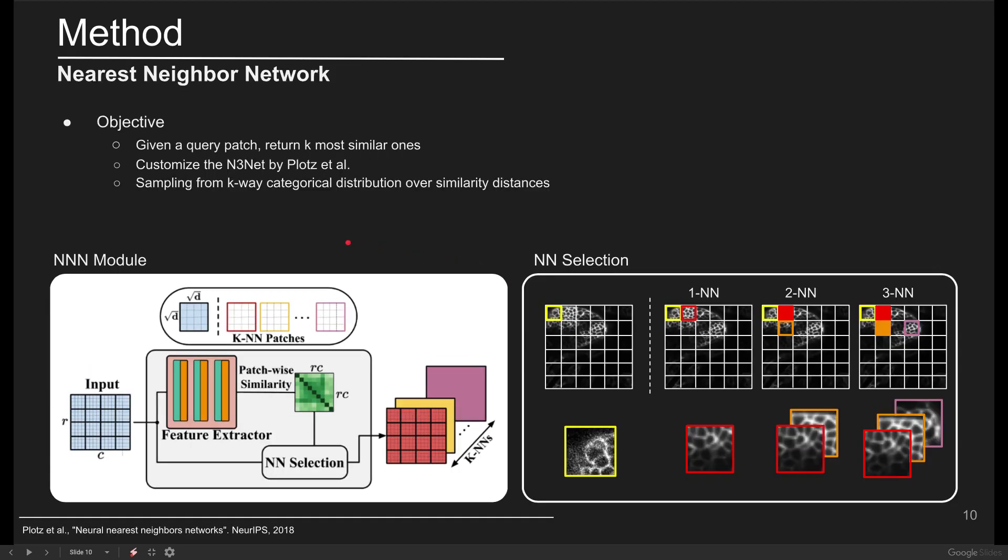The objective for the nearest neighbor network is to return the K most similar patches to the query patch. To do so, we tailor the entry network by plots et al. to our framework. We first crop the full image into multiple smaller regions. For each region, we extract five by five by five patches and fit them to three convolutional layers to extract embedding features.